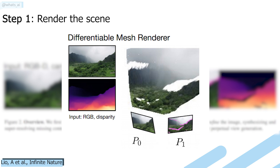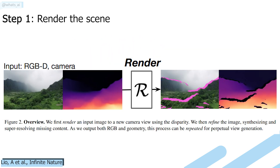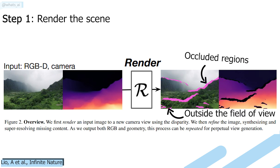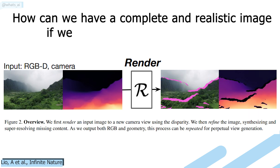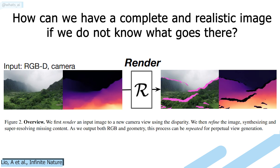This gives us an amazing new picture that looks just a bit zoomed in, but it is not simply zoomed. There are some pink marks on the rendered image and black marks on the disparity map. They correspond to the occluded regions and regions outside the field of view in the previous image used as input to the renderer, since this renderer only generates a new view but is unable to invent unseen details. This leads us to quite a problem: how can we have a complete and realistic image if we do not know what goes there?